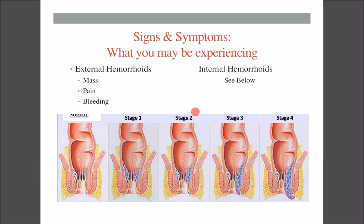For internal hemorrhoids, let's talk about the different stages. Normal anatomy shows the rectum, anus, and dentate line. Internal hemorrhoids stage one: the internal plexus is above the dentate line. Signs and symptoms for stage one are usually asymptomatic — you don't really feel them — so it's difficult to know whether you're having stage one internal hemorrhoids.